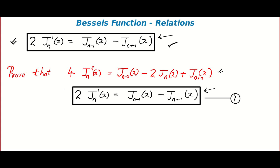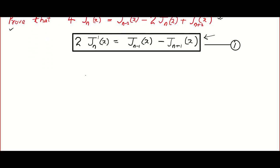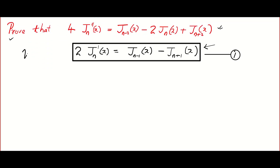Hello friends, welcome to Susan and John Math Tube. In this video we are going to work out a few questions that were frequently asked in question papers. The one I saw in many question papers was: prove that 4Jn''(x) equals a certain expression. To work out this question you should be very good with the relation between Jn, Jn-1, etc. There are many other methods, but this seems to be the easiest method to derive 4Jn''(x).